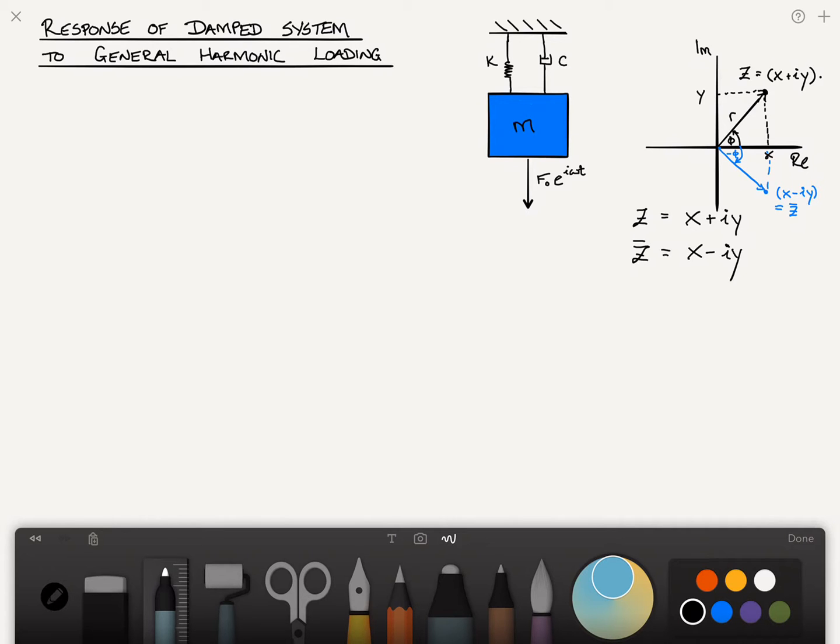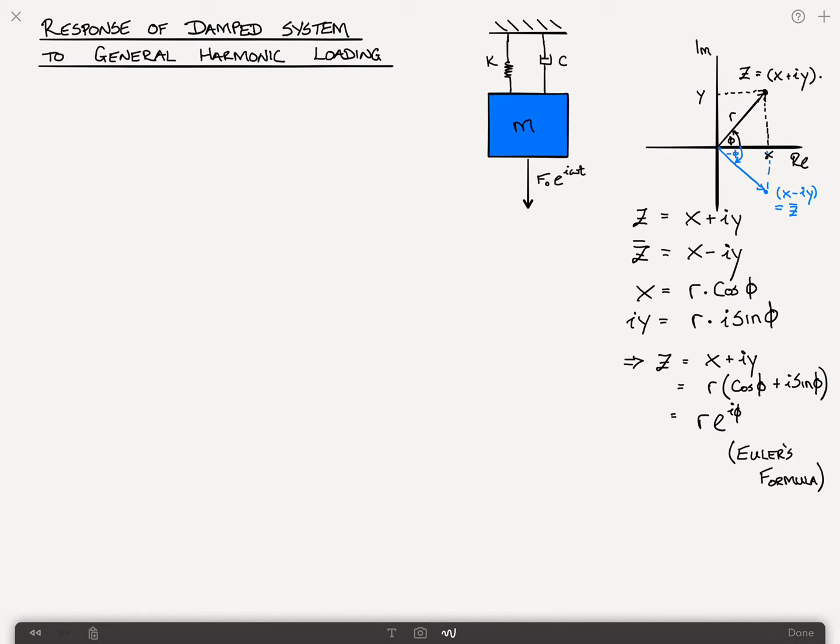I can choose to write this in polar coordinates, and the way I would do that is I would say x can be rewritten as r times cosine of phi. It's just straight trigonometry. y, or i y, can be written as r times i sine of phi. This implies that z, which is equal to x plus i y, can be written as r times cosine of phi plus i sine phi. Does anyone remember what that is? That is equal to r times e to the i phi. And that's due to Euler's formula.